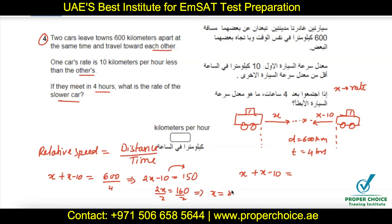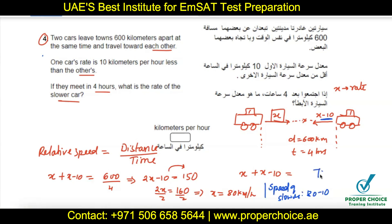Since x equals 80 km/h is the speed of the faster car, and the slower car's speed is x minus 10, the speed of the slower car is 80 minus 10, which is 70 kilometers per hour. So the answer is 70 km/h. This is a good-level question that you can expect when the difficulty level of the concept increases.